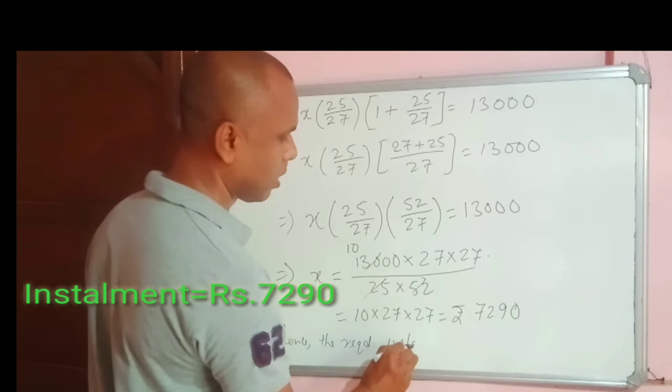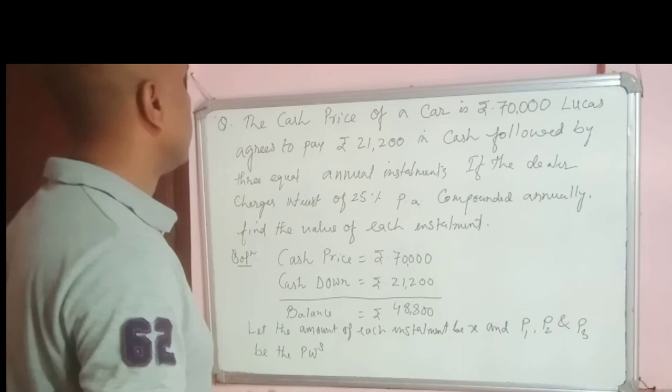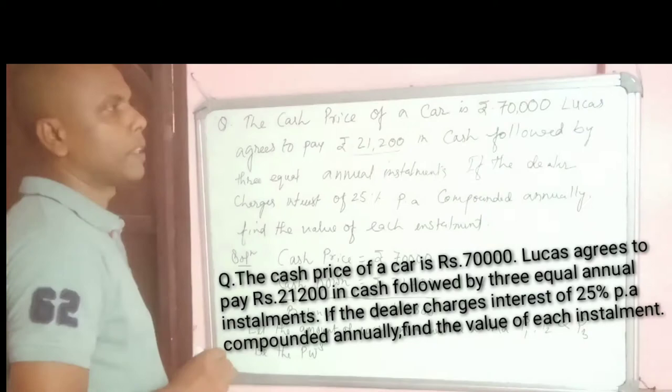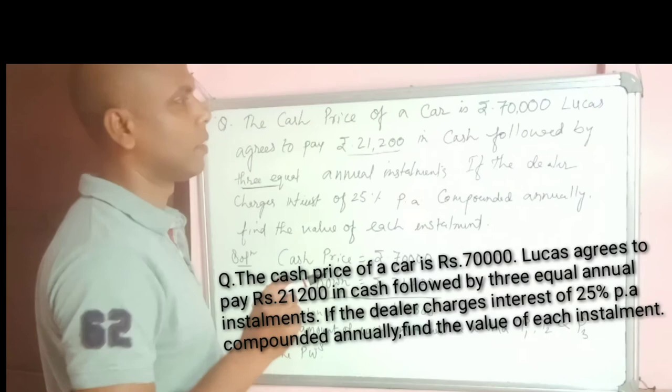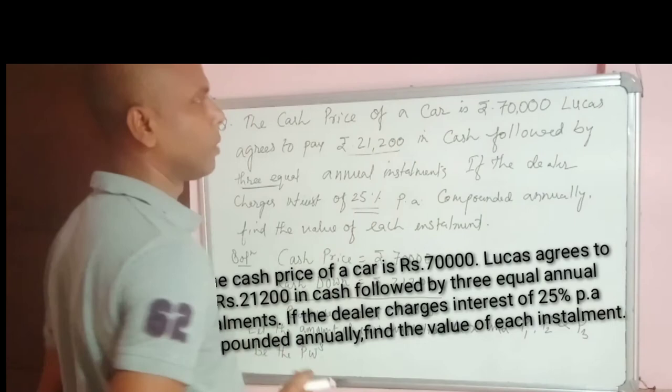Another problem. The cash price of a car is rupees 70,000. Lucas agrees to pay 21,200 in cash followed by three equal annual installments. Three installments we have here.